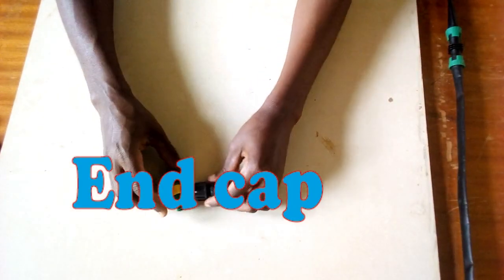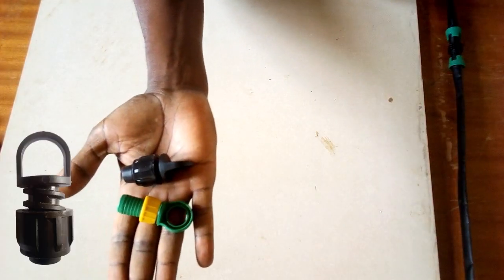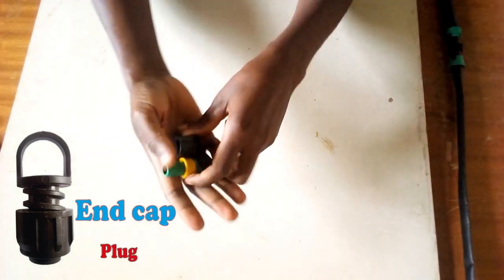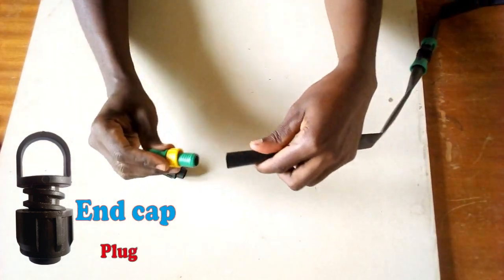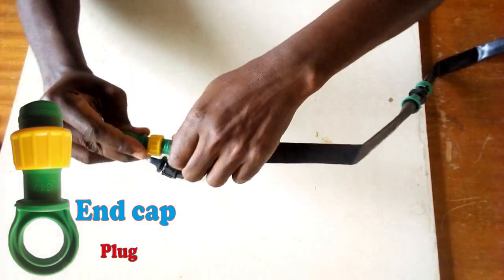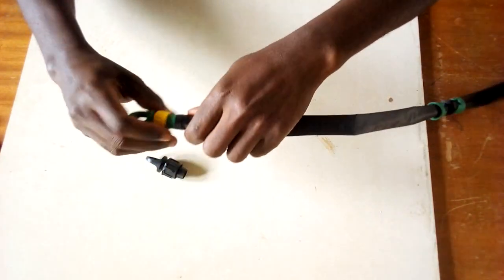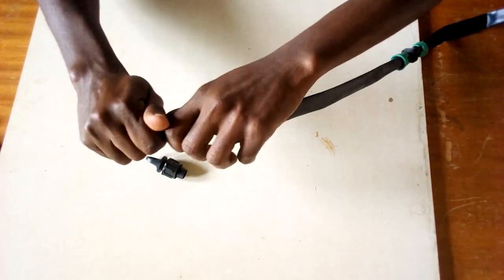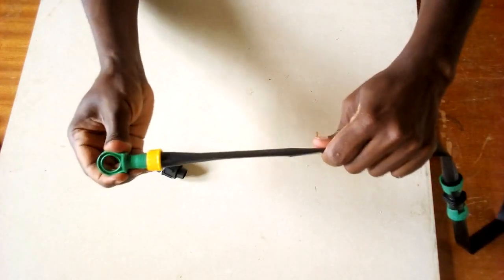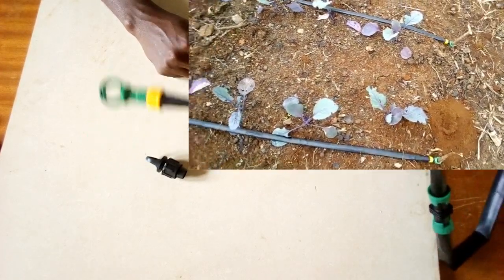Finally, I want to show you how to terminate a drip line. These are called end caps. There are many ways to terminate your drip line. But for those farmers who want to look professional, I guess this works.